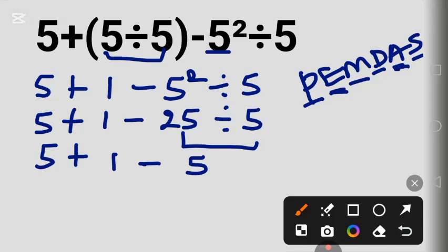The next thing is addition: 5 plus 1 equals 6 minus 5. The last one is subtraction: 6 minus 5 is 1. The correct answer is 1.